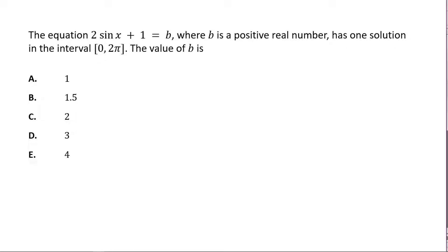We're going to answer this question before us. It says the equation 2 sin x plus 1 equals b, where b is a positive real number, has one solution in the interval 0 to 2π. The value of b is what?